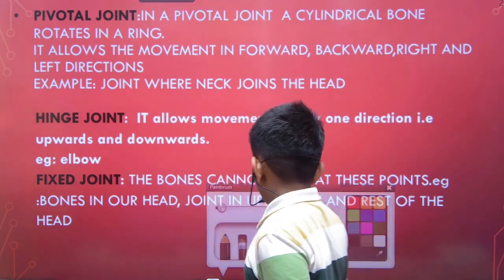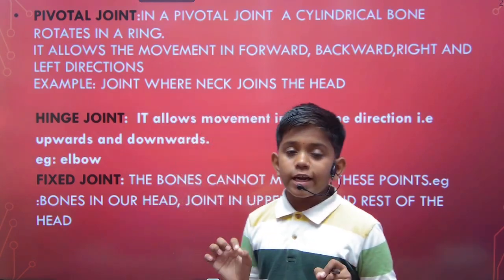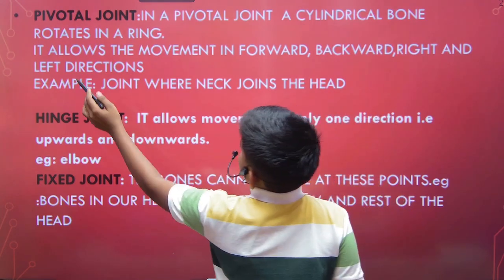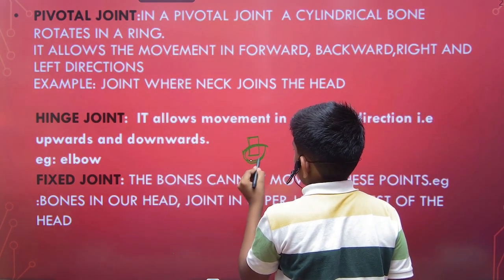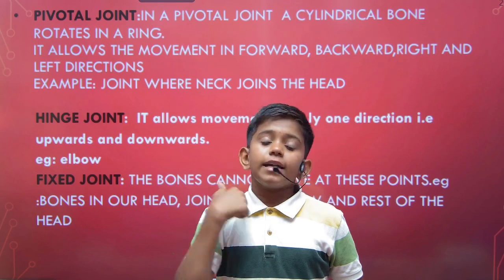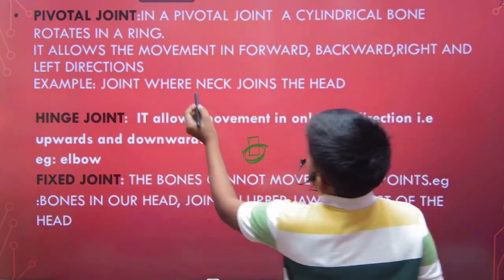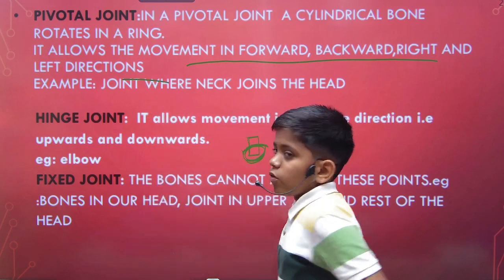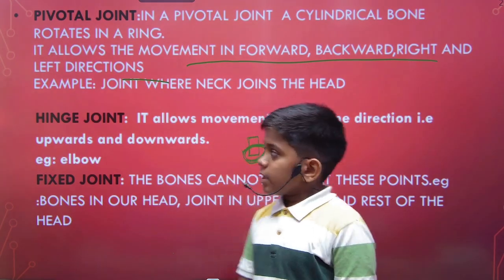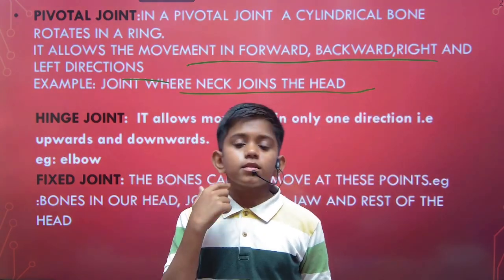Next we have the pivotal joint. A pivotal joint consists of a cylindrical bone rotating in a ring. The example is our neck — it has a cylindrical bone and a ring below it, allowing neck rotation. It allows movement in forward, backward, right, and left directions. The joint where the neck joins the head is a pivotal joint.